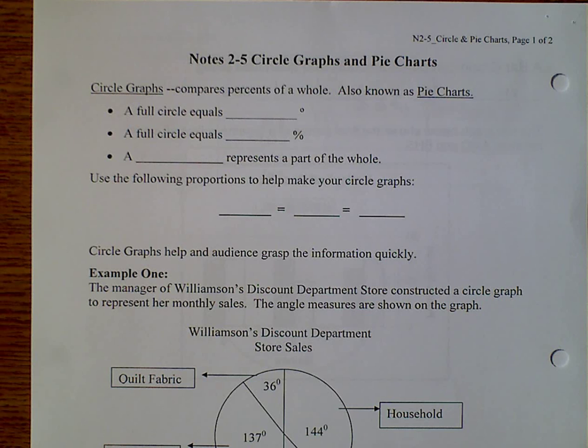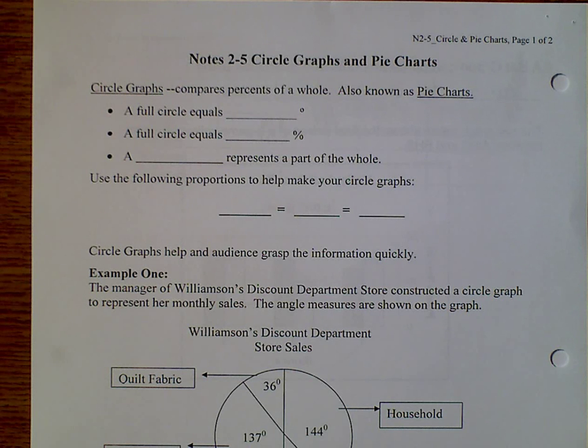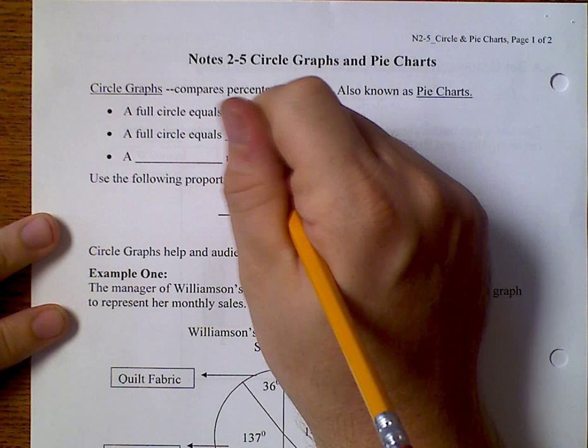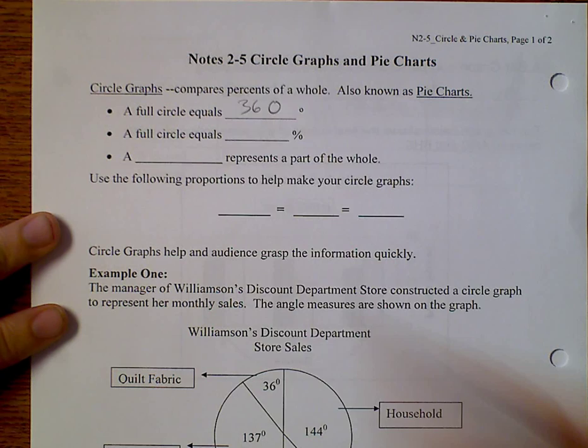Now we're going to be talking about circle graphs and pie charts. So a circle graph, we also call it a pie chart, compares percents of a whole. And so here's a few facts we need to know. We need to know that a full circle is 360 degrees and 100%.